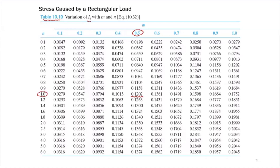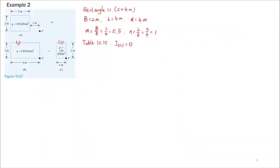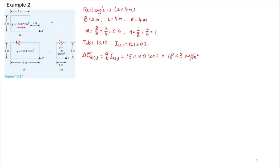That's the I3 value for the large rectangle. The stress increase at point A prime due to Rectangle 1 is Q — the surface pressure — times I3. That's 150 times 0.1202, giving 18.03 kN per meter squared.